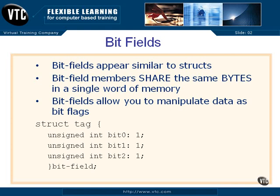Here's how you create a bit field — not that you're ever going to have to, but here's how you do it. You use the keyword struct, just like with a normal structure, along with a tag, an open brace, and then an unsigned integer. We're going to call this variable bit_zero — it can be whatever you need it to be — followed by a colon and the number of bits assigned to this first variable. So that's just one bit there, then bit_one and bit_two, each one bit. We're only going to take up three bits.